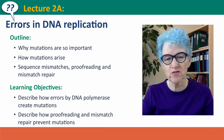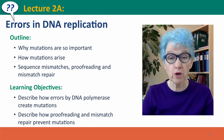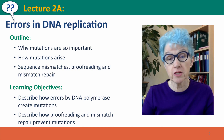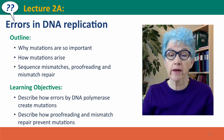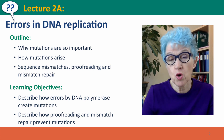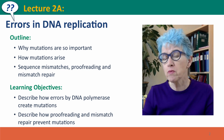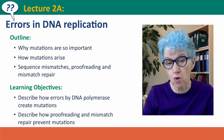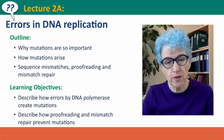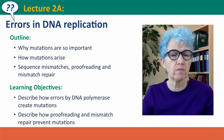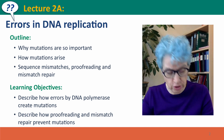Hi, everyone. Welcome back to Useful Genetics. This is the start of Module 2, where we're talking about mutations. In this first lecture, we're going to talk specifically about errors in DNA replication. We'll first introduce why we care so much about mutations, and then we'll talk about how mutations arise, and about the events that determine whether a mistake by DNA polymerase actually turns into a mutation.